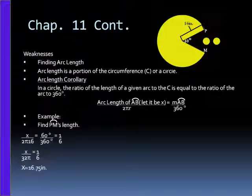Here's an example. Find PM, short for Pac-Man's, arc length. So x over 2π(16) equals 60 degrees over 360, or 1 sixth for short. So now you set that equal to x over 32π, and x is approximately 16.75 inches. So that's the length of Pac-Man's arc.